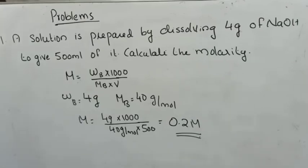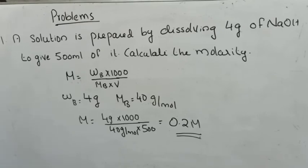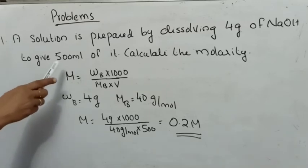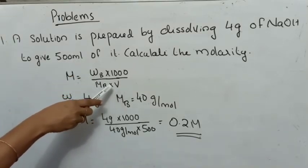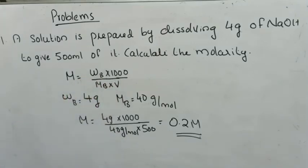Let's do a problem. A solution is prepared by dissolving 4 grams of NaOH to give 500 ml of solution. Calculate the molarity. Molarity is number of moles of solute by volume of solution in liters. Since volume is given in milliliters, divide by 1000 — that 1000 goes up. The expression is M = WB × 1000 / (MB × V). Here WB is given as 4 grams — that is the solute.